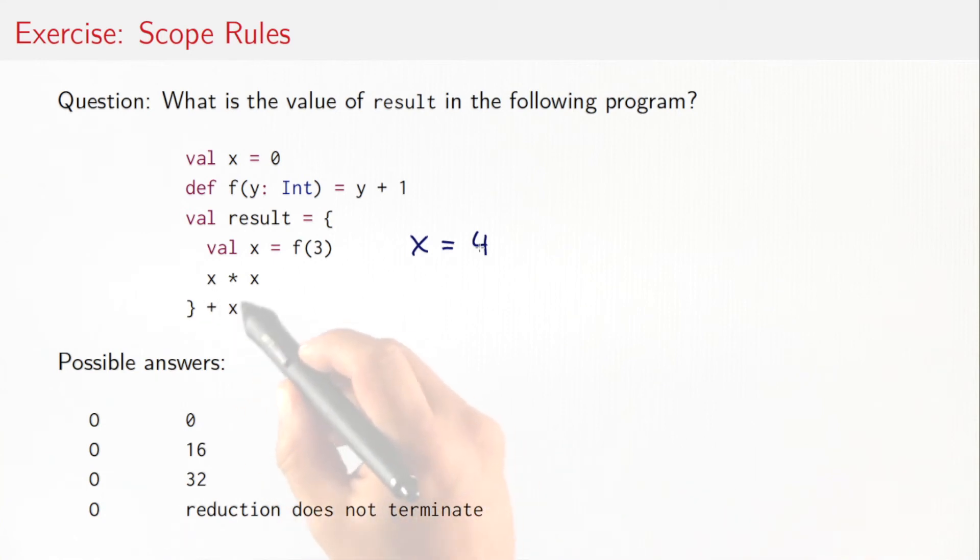So then the value of x times x would be sixteen. And we take that value and add x to it. What's the value of x here? Well, we are now outside the block, so the value of x here is no longer visible. And the value we do see here is this first definition, so that would be zero. So the result of the whole expression is sixteen.